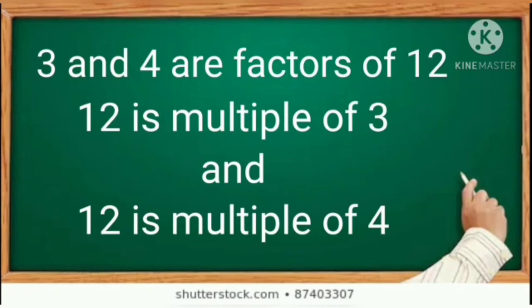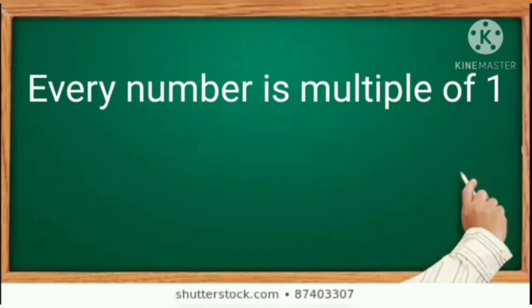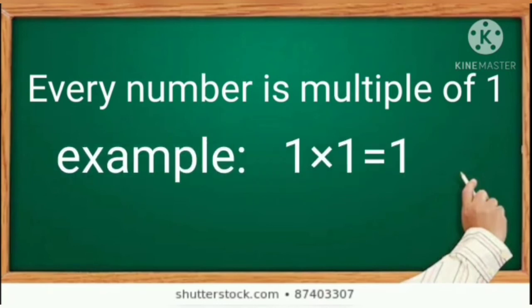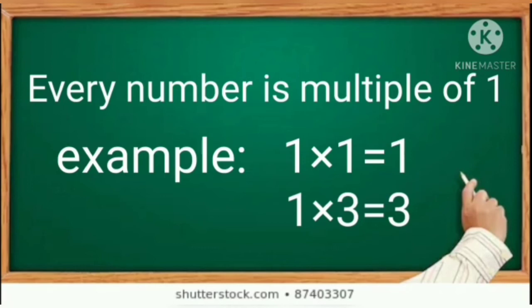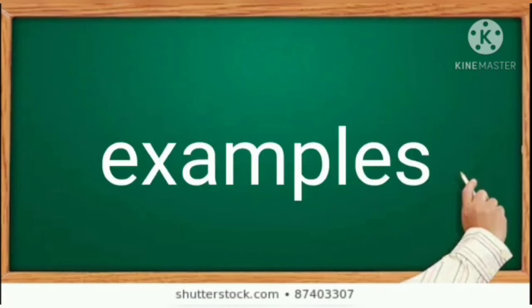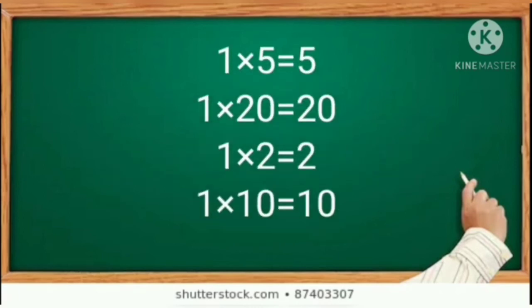We conclude that every number is a multiple of 1. For example, 1 into 1 is equal to 1; 1 into 3 is equal to 3; 1 into 5 is equal to 5; 1 into 20 is equal to 20; 1 into 2 is equal to 2; 1 into 10 is equal to 10.